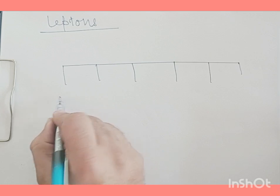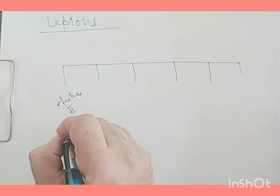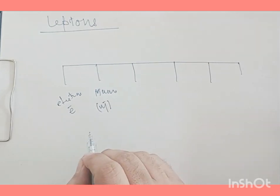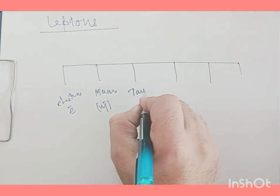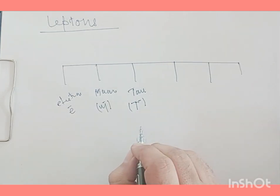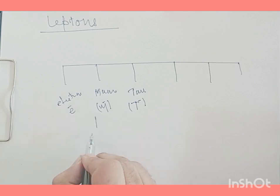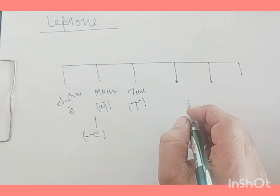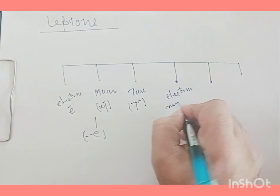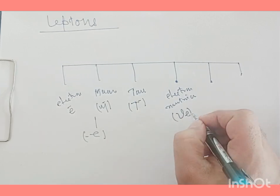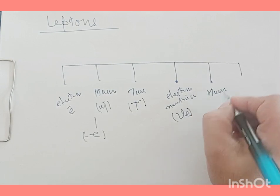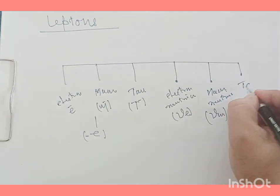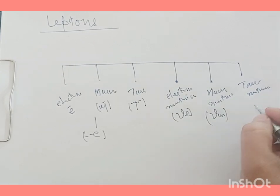We have the electron, which is a charged particle denoted as e-negative. Then we have the muon, mu-negative, which is a charged particle. And tau, also a charged particle. Each of these three charged particles has a charge equal to minus e. The remaining three are the electron neutrino (ν_e), the muon neutrino (ν_μ), and the tau neutrino (ν_τ).